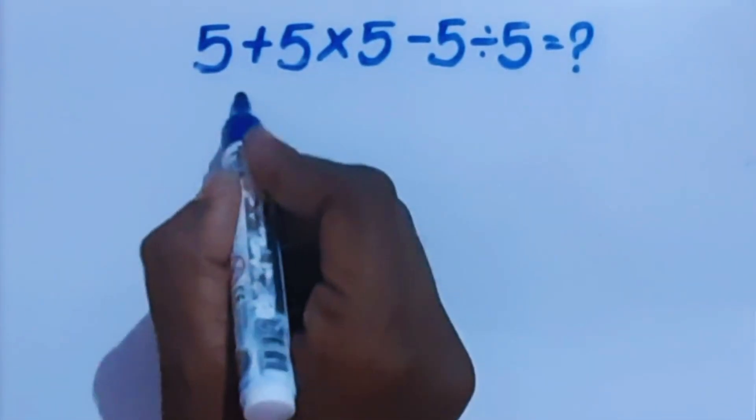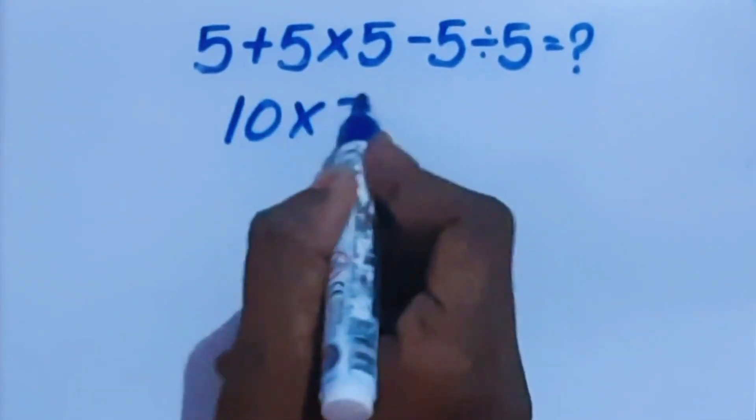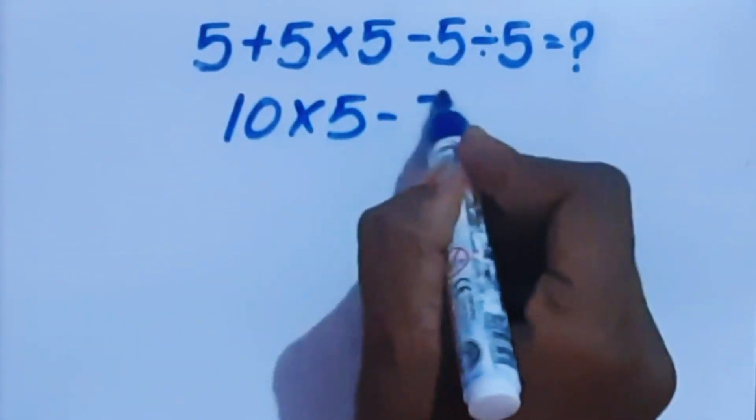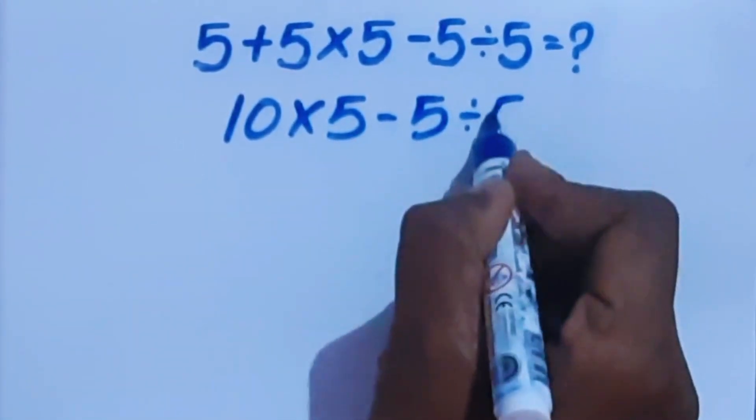Here, 5 plus 5 is 10 times 5 minus 5 divided by 5.